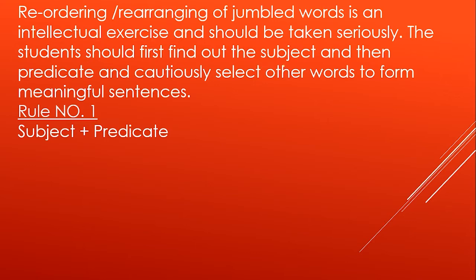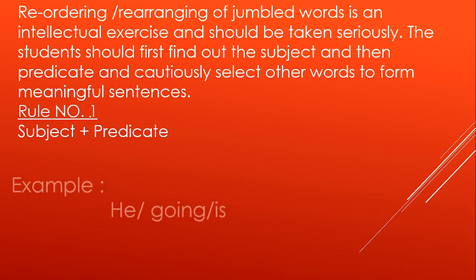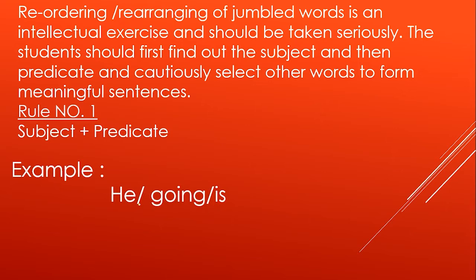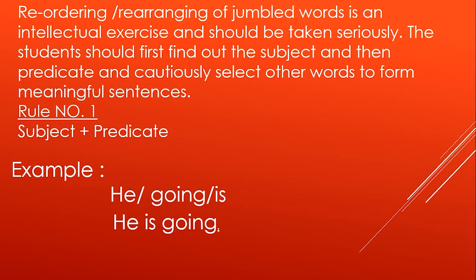The students should first find out the subject and then the predicate, and cautiously select other words to form meaningful sentences. So student's first work is that you find the subject first. Let us take an example. Here we have jumble words and we have to arrange them to form a meaningful sentence. The subject means the doer of the action. The predicate tells us about the subject — what the subject is doing. So this was Rule 1, simple.